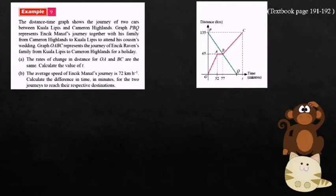Example 9: The distance-time graph shows the journey of two cars between Kuala Lipis and Cameron Highlands. Graph PBQ represents Encik Manaf's journey together with his family from Cameron Highlands to Kuala Lipis to attend his cousin's wedding. Label the information first: this is graph PBQ, here is Cameron Highlands and Kuala Lipis. Graph OAPC represents the journey of Encik Manaf's family from Kuala Lipis to Cameron Highlands for a holiday. Part A: The rate of change in distance for OA and BC are the same. Calculate the value of T.